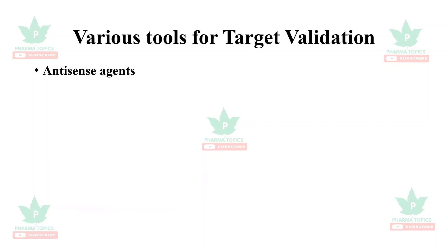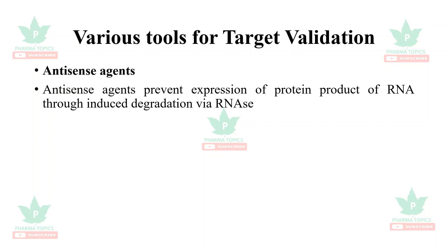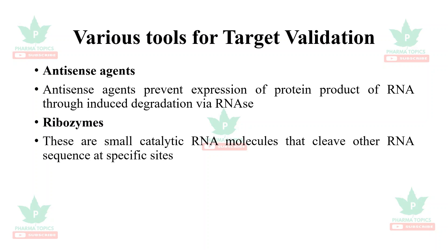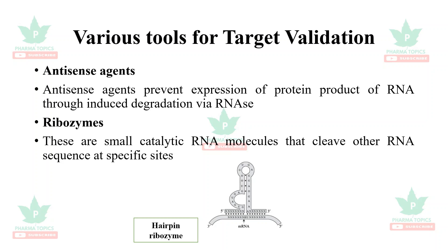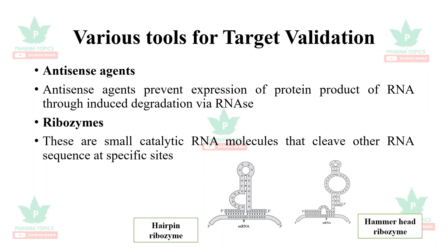Antisense agents prevent the expression of a protein product of RNA through induced degradation of the RNA via RNase enzymes. Ribozymes are small catalytic RNA molecules that cleave another RNA sequence at specific sites. There are two types of ribozymes: the hairpin ribozyme and the hammerhead ribozyme.